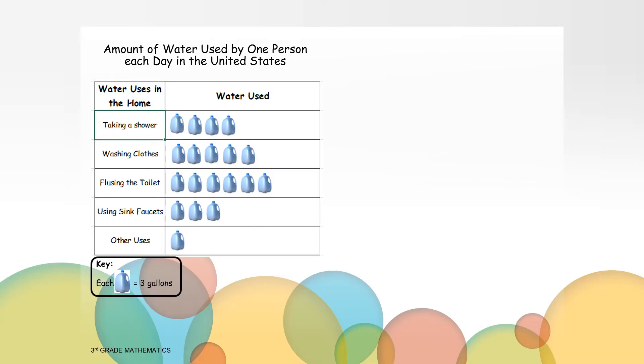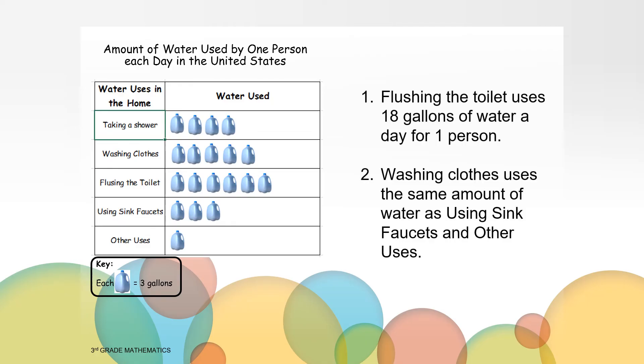Here are some statements related to the pictograph. Number one, flushing the toilet uses 18 gallons of water a day for one person. Number two, washing clothes uses the same amount of water as using sink faucets and other uses. I will give you a moment to check both statements and decide if they are true or false.